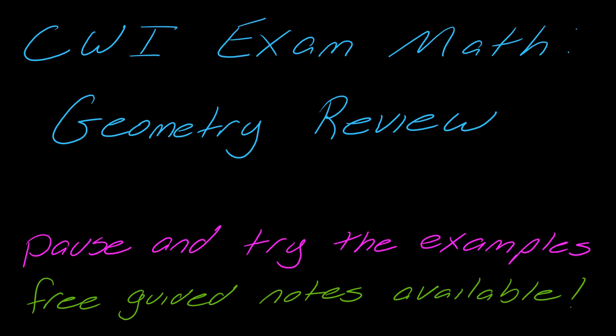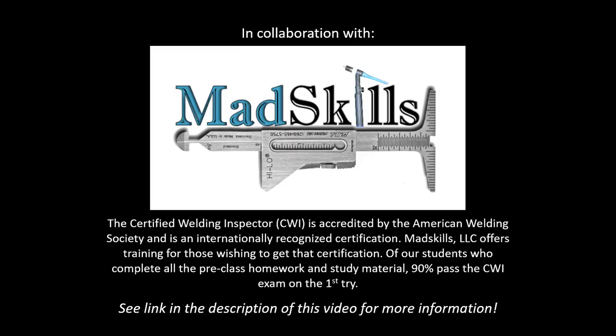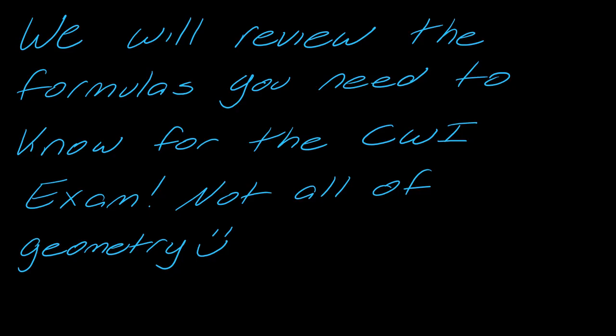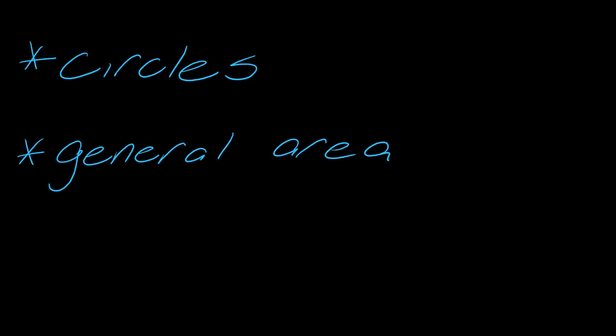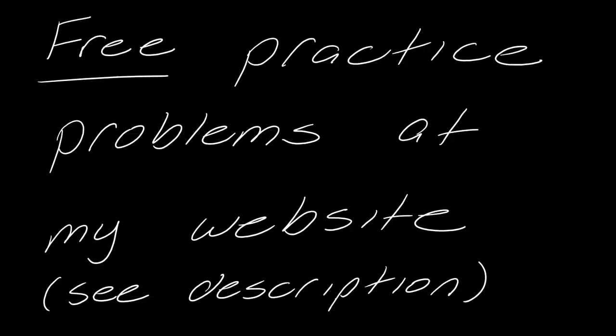This is a geometry review for the certified welding inspector exam, in collaboration with MADSKILLS, which offers training for that exam. You can check out the description for more information. We will review formulas you need to know for the CWI exam, not all of geometry. We're going to focus on circles and general area. There are free practice problems at my website in collaboration with MADSKILLS — check the description because you absolutely need to practice this if you are rusty.